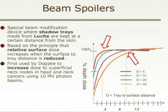Beam spoilers are a special beam modification device where shadow trays made from loose sheet are kept at a certain distance from the skin, based on the principle that relative surface dose increases when the surface-to-tray distance is reduced.